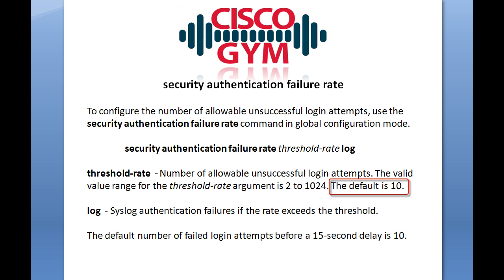It says here the default is 10, but that's not really true. Security Authentication Failure Rate is not enabled by default on the router, so in order to enable this you have to configure Security Authentication Failure Rate and specify a value between 2 and 1,024 for that Threshold Rate argument. You can't leave that blank, so technically there could be a default of 10, but it's really never going to come into play because when you turn on this feature you have to specify a threshold rate.